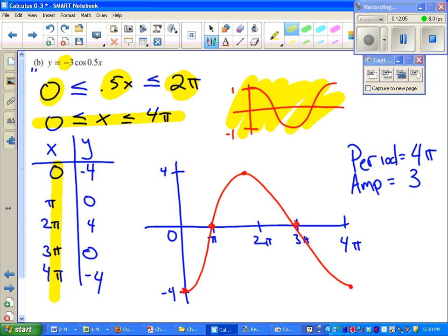And instead of starting at one, like my parent function would for y, I would start at four, except I'm flipped. That's why I start at negative four. Zero, four, zero, negative four. I can plot all those points and draw my curve. Figure out my period and my amplitude using either of the methods I showed you on the previous example. That's it for this one.